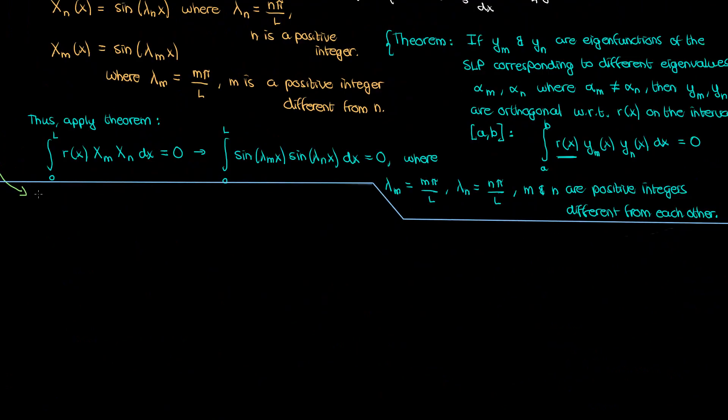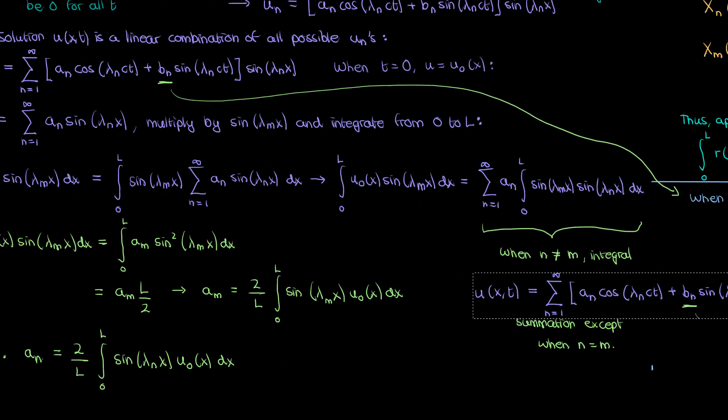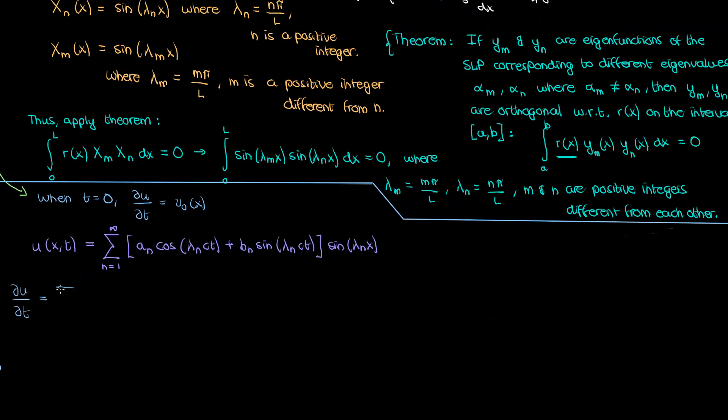Well we use the second initial condition which states that when t is 0 the partial of u with respect to t is v0 of x. To find this partial u partial t let's bring in our u again and take its partial derivative with respect to t. When we do that this is what we get. Now we can substitute the initial condition in which case the a sub n term cancels because sine 0 is 0 while the b sub n term remains because cosine 0 is 1.